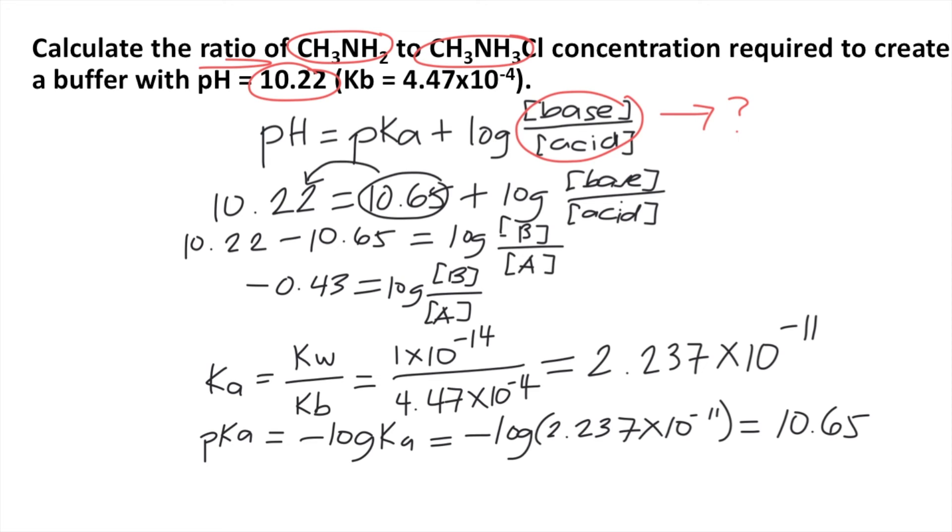What's next? We want just the ratio of base over acid. So we want to remove the log. Let's continue our calculation here. If you want to remove the log on the right side so that your right side is just base over acid, what you're going to do is 10 raised to whatever is on the other side. So 10 raised to negative 0.43.